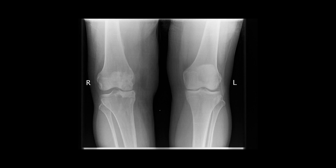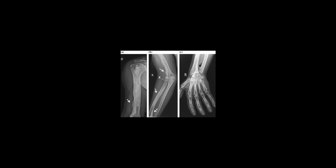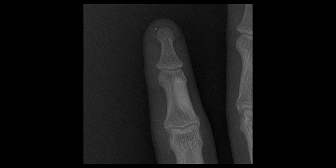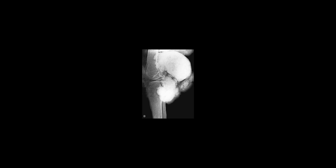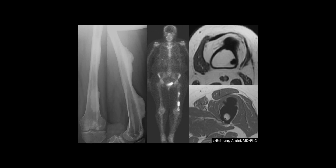The disorder tends to be unilateral and monostotic, i.e. affecting a single bone, with only one limb typically involved.